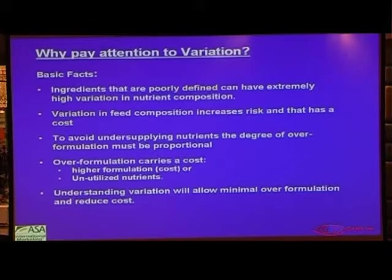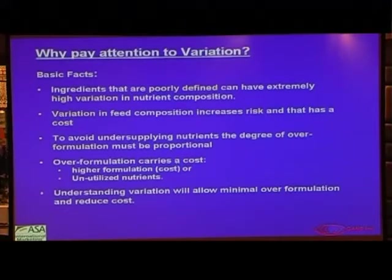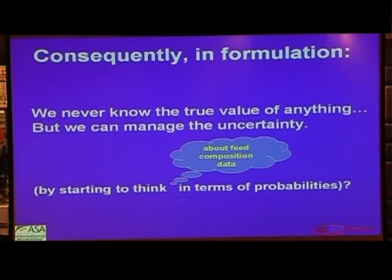Why should we pay attention to variation? Ingredients that are poorly defined can have extremely high variation — that is characteristic, for instance, of palm kernel cake and coconut meal, which is widely used in the Philippines. Variation in feed composition increases risk and carries a cost. To avoid undersupplying nutrients, the degree of over-formulation must be proportional and is reflected in the standard deviation you formulate with. Over-formulation is, of course, costly. We realize that we never know the true value of anything, but we can manage the uncertainty.